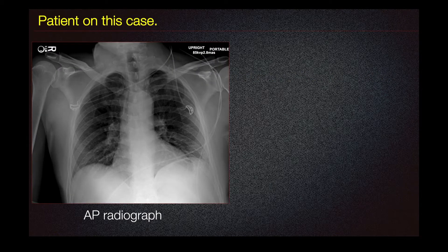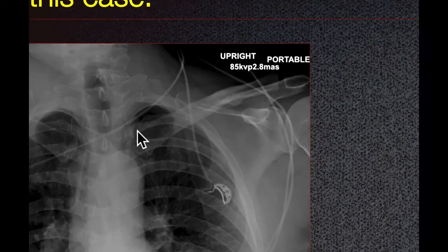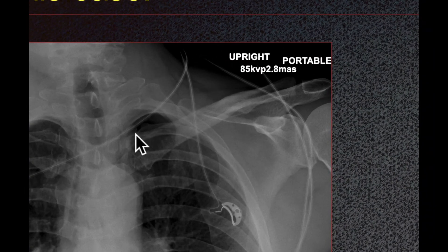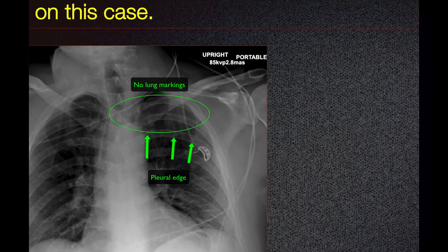The patient in this case presented with this AP radiograph, demonstrating a left apical pneumothorax. Here we can see that the lung markings in the left lung apex are no longer visualized, consistent with a small pneumothorax.